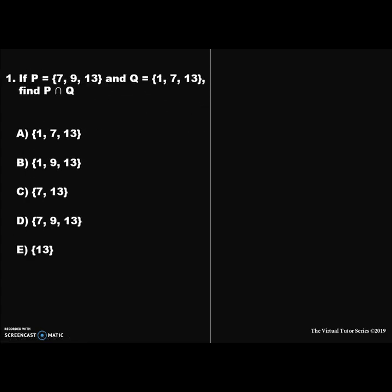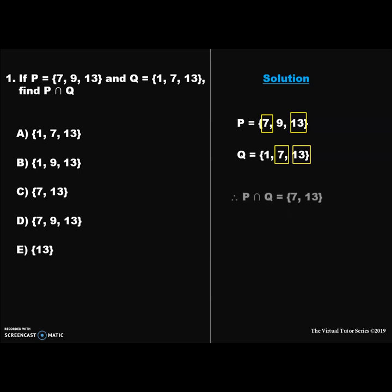Question 1. Set P is equal to {7, 9, 13} and set Q is equal to {1, 7, 13}. Find P intersection Q. Solution: We have been given set P as {7, 9, 13} and set Q as {1, 7, 13}. P intersection Q is a set of elements that are common to both P and Q. It can be seen that 7 and 13 are common to both sets. Therefore, P intersection Q is the set containing 7 and 13. So the correct answer is option C.